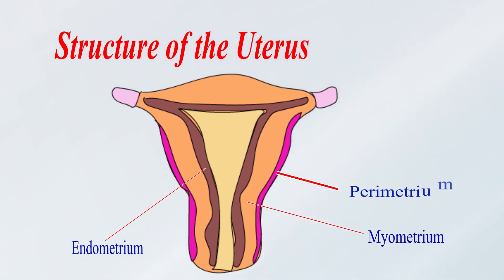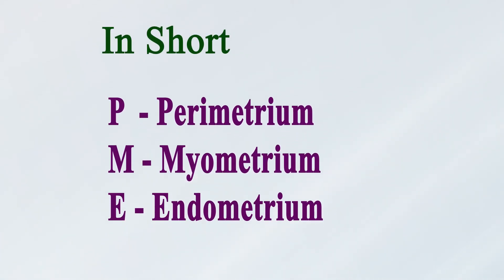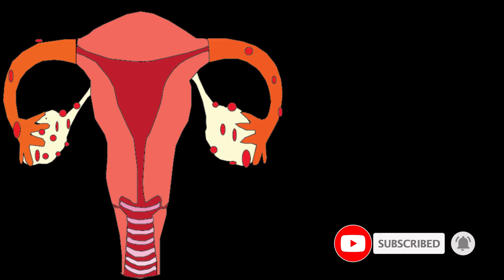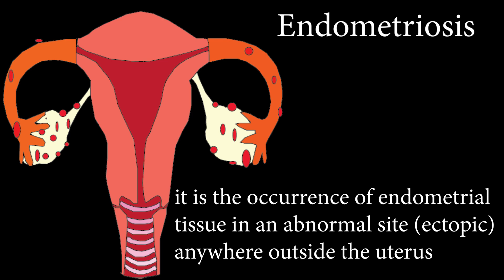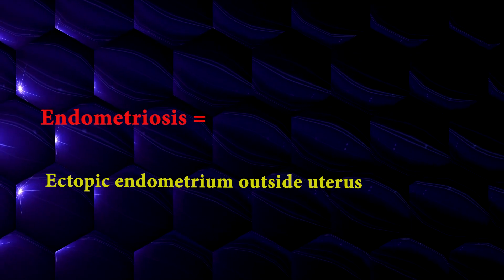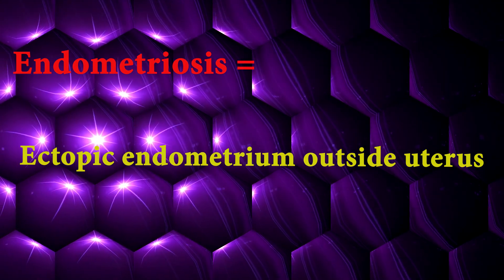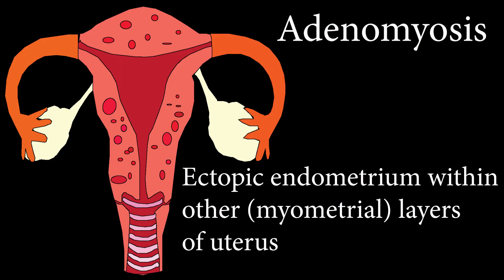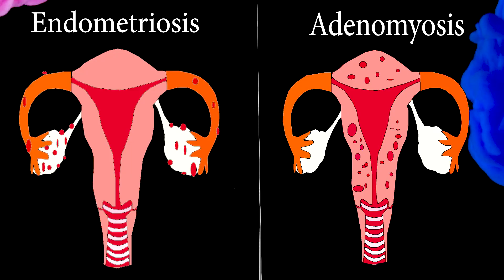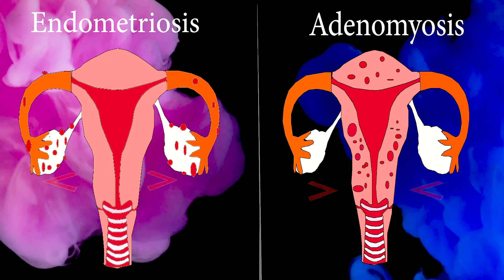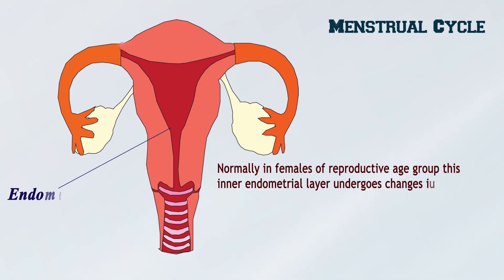The female uterus has three layers: the outer layer is perimetrium, the middle one is myometrium, and the innermost layer is endometrium — in short, PME. Endometriosis is the occurrence of endometrial tissue in an abnormal site, termed ectopic, anywhere outside the uterus. Adenomyosis is ectopic endometrium within other layers of the uterus. So ectopic endometrium outside the uterus is endometriosis; within the uterus is adenomyosis.